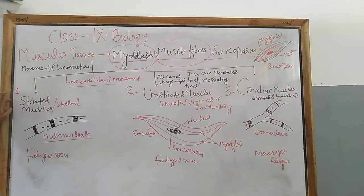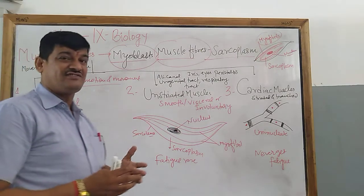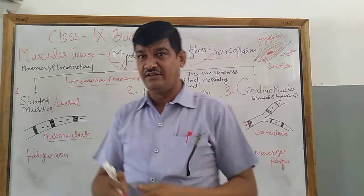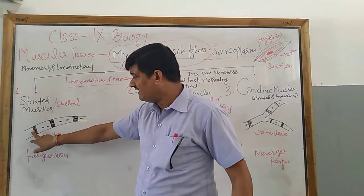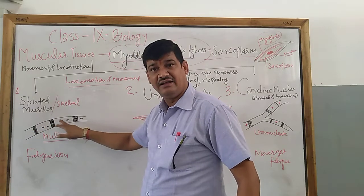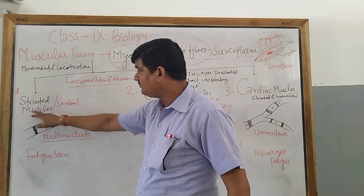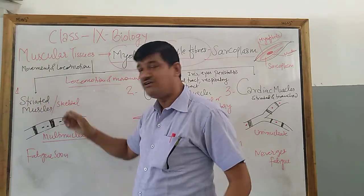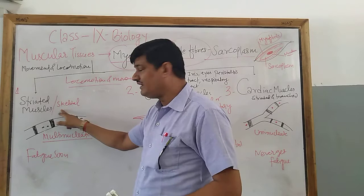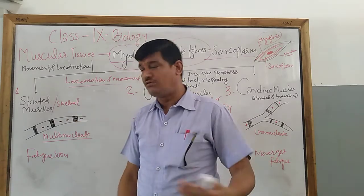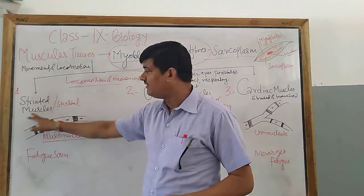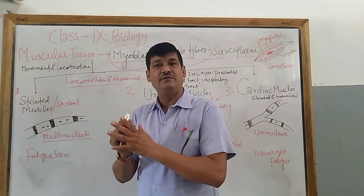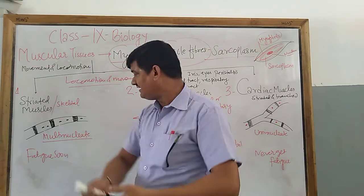What is striated muscle? As the name suggests, striated means it has striations, that is, bands. The muscles which have light bands and dark bands in parallel are known as striated muscles. These muscles are joined or bound to our skeletal system or bone, so we also call them skeletal muscles.